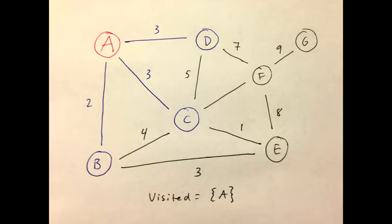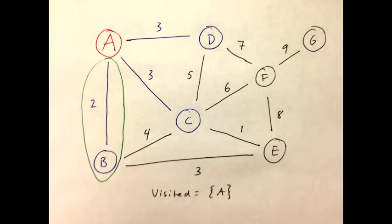Next, examine all vertices reachable from A. They are shown in the graph with blue edges. Prim's is a greedy algorithm, so we're going to choose the smallest edge that connects to an unvisited node. In this case, A to B.